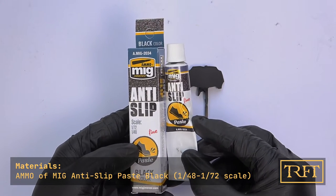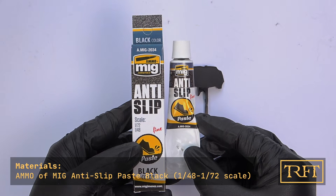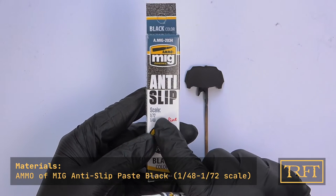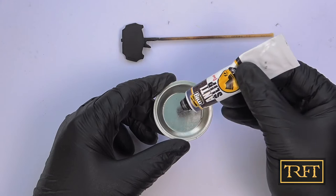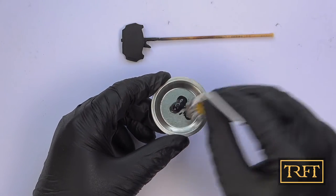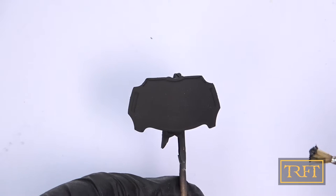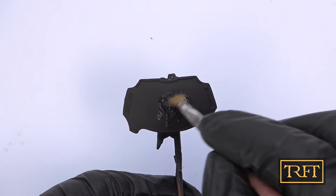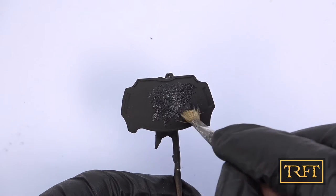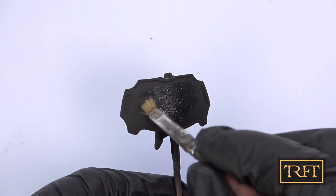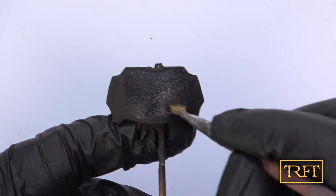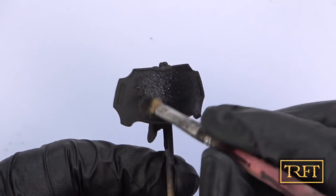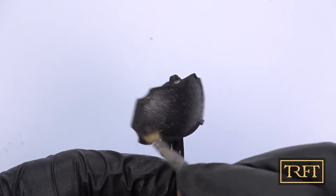As most of my Patreon supporters will know, lately I've been experimenting with this product from Ammo of MIG called Anti-Slip Paste. Originally created to replicate the anti-slip surfaces on some modern military vehicles, like the Israeli Merkava tanks, this is a very easy-to-use acrylic paste which I'm using with sci-fi models like this in order to create a rough metal texture which I believe really enhances the liquid mask chipping technique that I prefer to use. To apply the product, simply take a flat brush and stipple it onto the surface. The anti-slip paste goes on very easily and creates a very interesting texture which I really loved on these pieces.